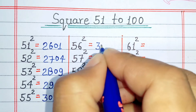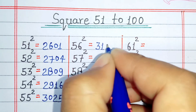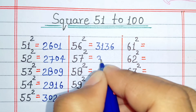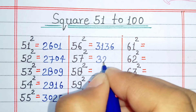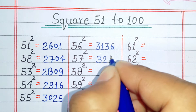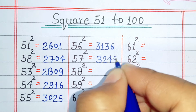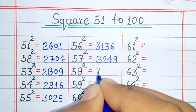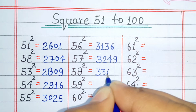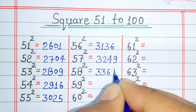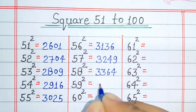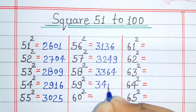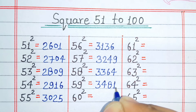Square of 56 is 3136. Square of 57 is 3249. Square of 58 is 3364. Square of 59 is 3481.